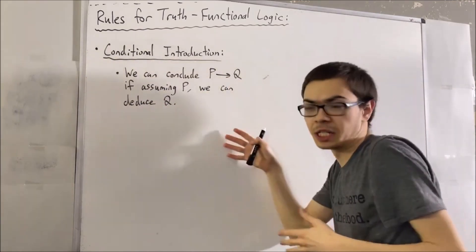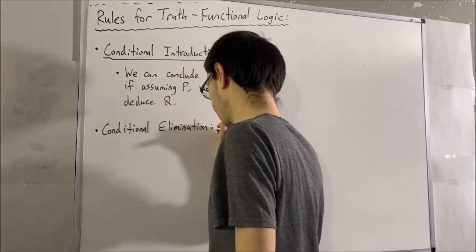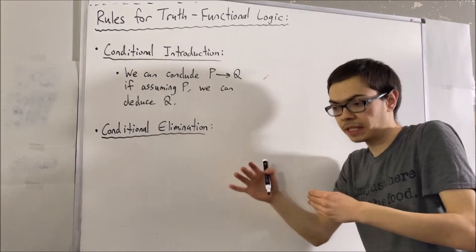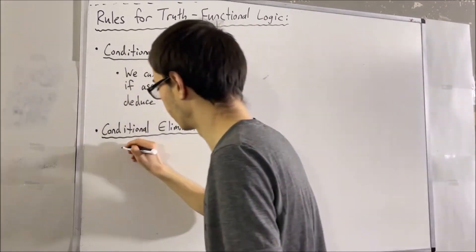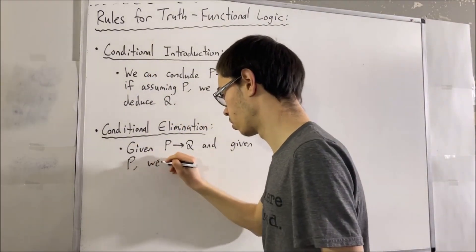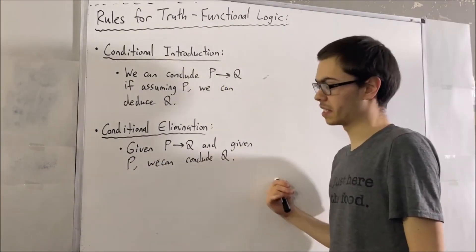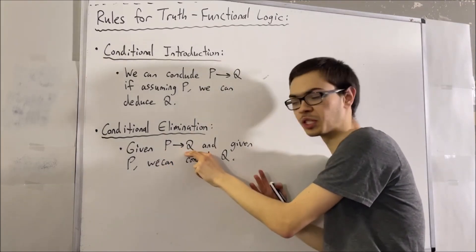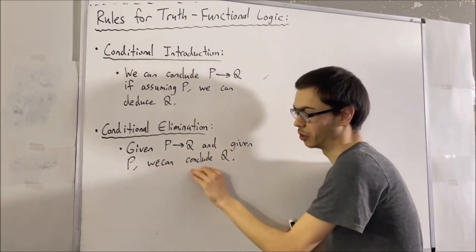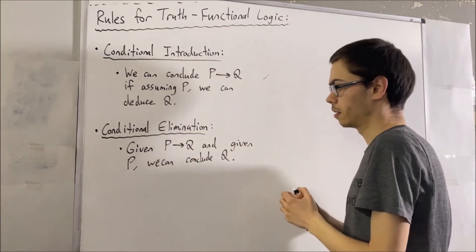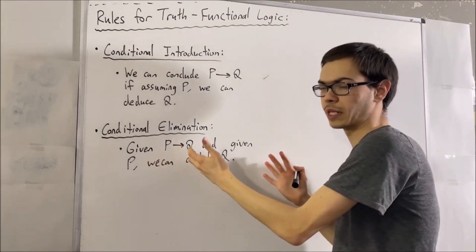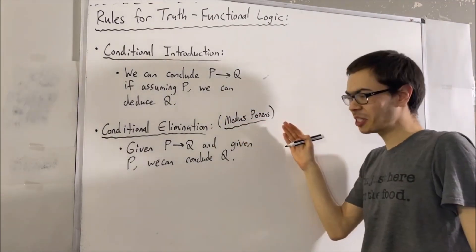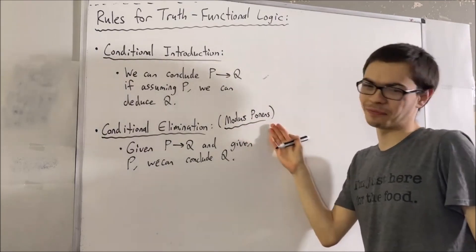Now let's go to conditional elimination. The way conditional elimination works is, if we're given P implies Q and we're given P, then we can conclude Q. That makes sense because P implies Q means if P is true, then we can conclude that Q is true. Well, we know that P is true, so we can conclude Q is true. This rule has another name — it's referred to as modus ponens. It just happens to be a name that shows up.